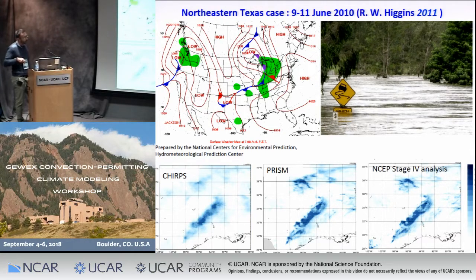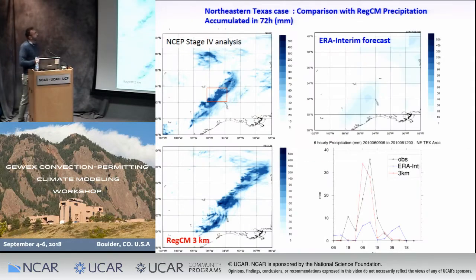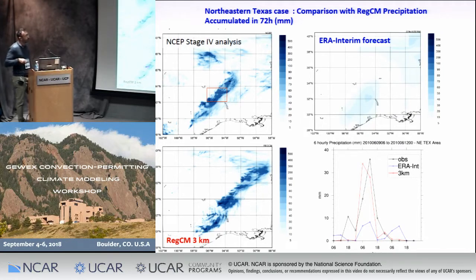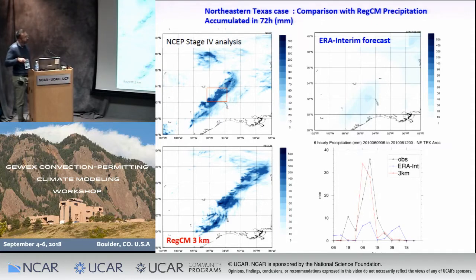CHIRPS underestimates the precipitation in this part of the domain. The model results show that, like the previous case, here we have the observation, here the initial and boundary forcing, and here the convection-permitting simulation. The convection-permitting simulation is able to reproduce well the observation — in particular the North-Eastern Texas maximum — and also shows a tendency to simulate precipitation in a part of the domain not detected by the observation. Also in this case, the model is able to reproduce the temporal evolution of events, and the convection-permitting simulation is also able to reproduce the intensity of the maximum.